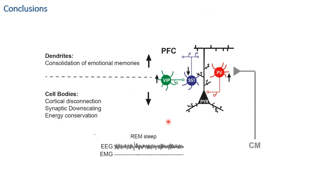In conclusion, selectively during REM sleep there is a decoupling in prefrontal circuits where pyramidal neuron cell bodies are inhibited and dendrites are disinhibited, due to reorganization of local interneurons regulated by long-range thalamic projections. Dendritic activity is necessary to store emotional information during REM sleep. Silencing the cell body provides a cortical disconnection — dendrites consolidate emotional information but cell output is silent, avoiding interference with downstream targets. This could be a mechanism of dreams, synaptic downscaling and upscaling in different compartments, and energy conservation during REM sleep.